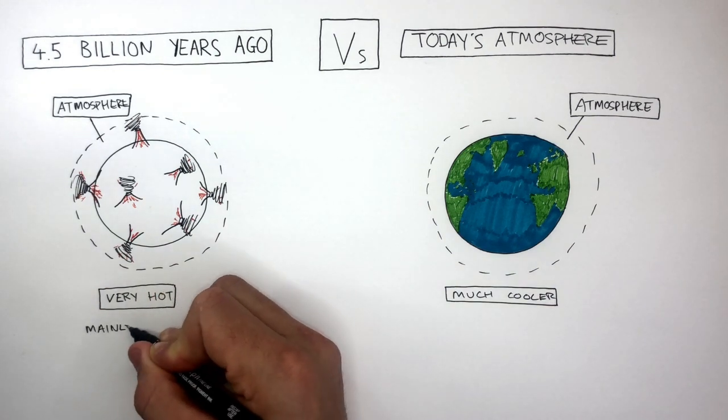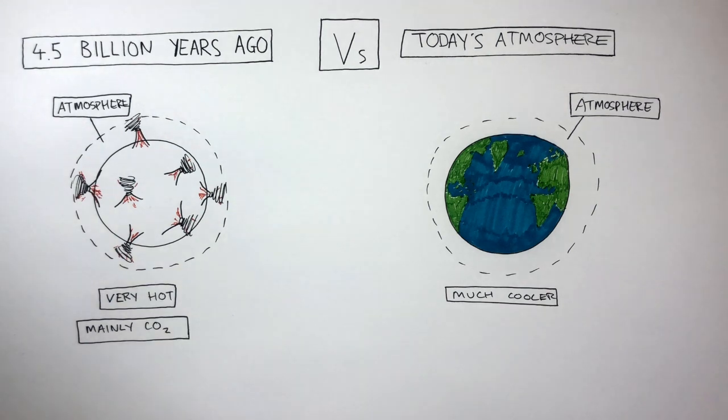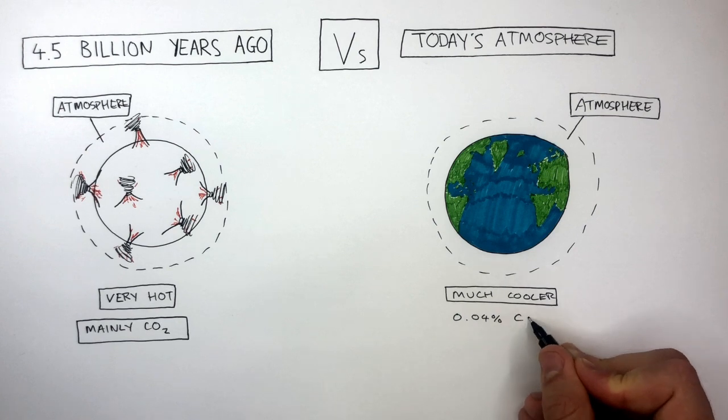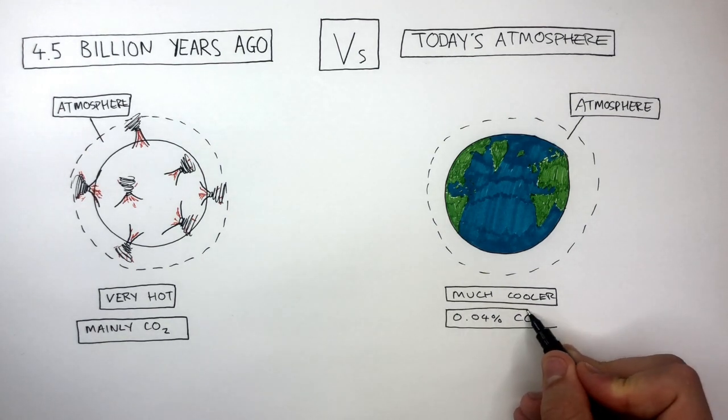There was mainly carbon dioxide present in Earth's early atmosphere, whereas in today's atmosphere there is 0.04% carbon dioxide. This is a very big change due to several reasons.